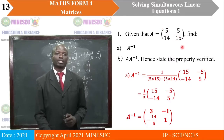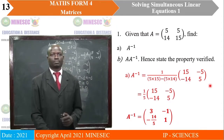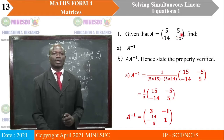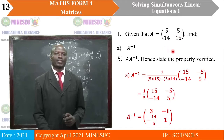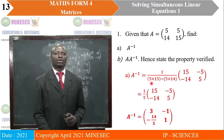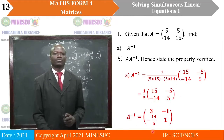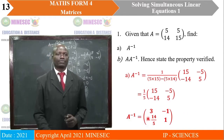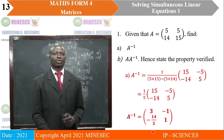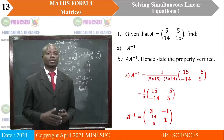The adjoint is obtained by swapping elements of the main diagonal: 15 goes up, 5 goes down. Then 14 and 5 in the other diagonal, we simply change their signs. When we simplify, we have 1 over (75 - 70), which is 1 over 5 into the adjoint. So A inverse is, multiplying each entry by 1/5: [3, -1; -14/5, 1]. That's the inverse of A.